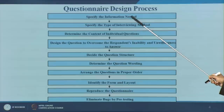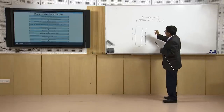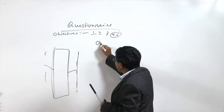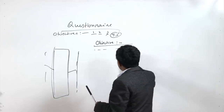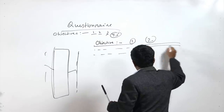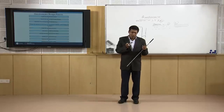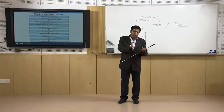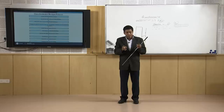Now let us see how to start the questionnaire design process. First: specify the information needed. I always tell my students that whenever you make a questionnaire, before you give it to respondents, please write your study objective at the beginning of each page — I repeat, each page. This way it will always keep you on track. If you don't, in the process of making the questionnaire you can get diverted from the objective.